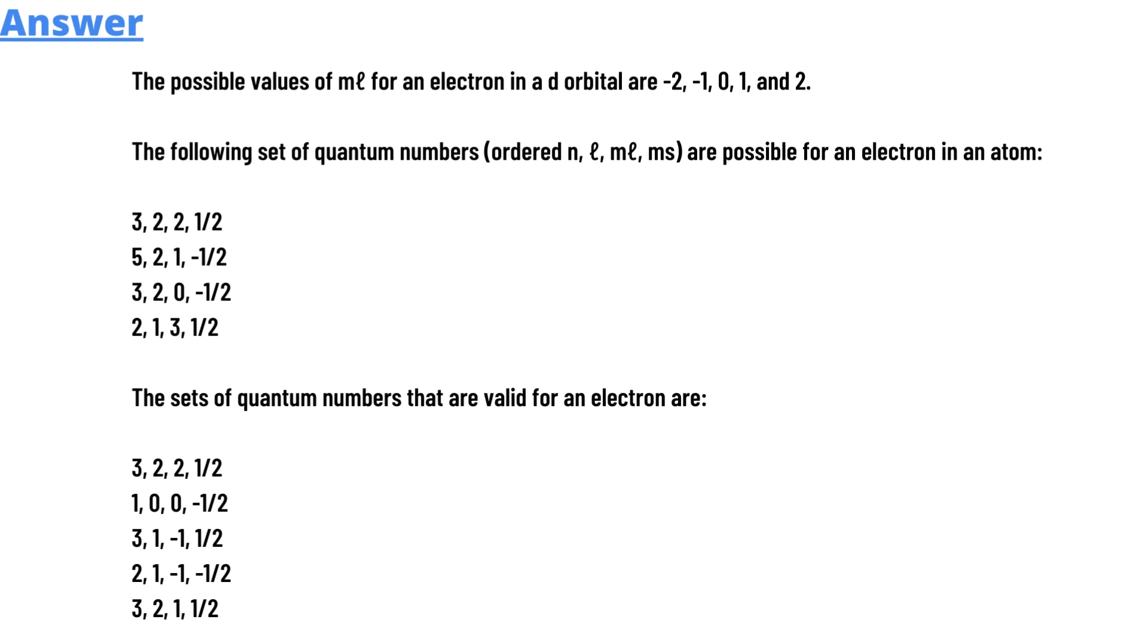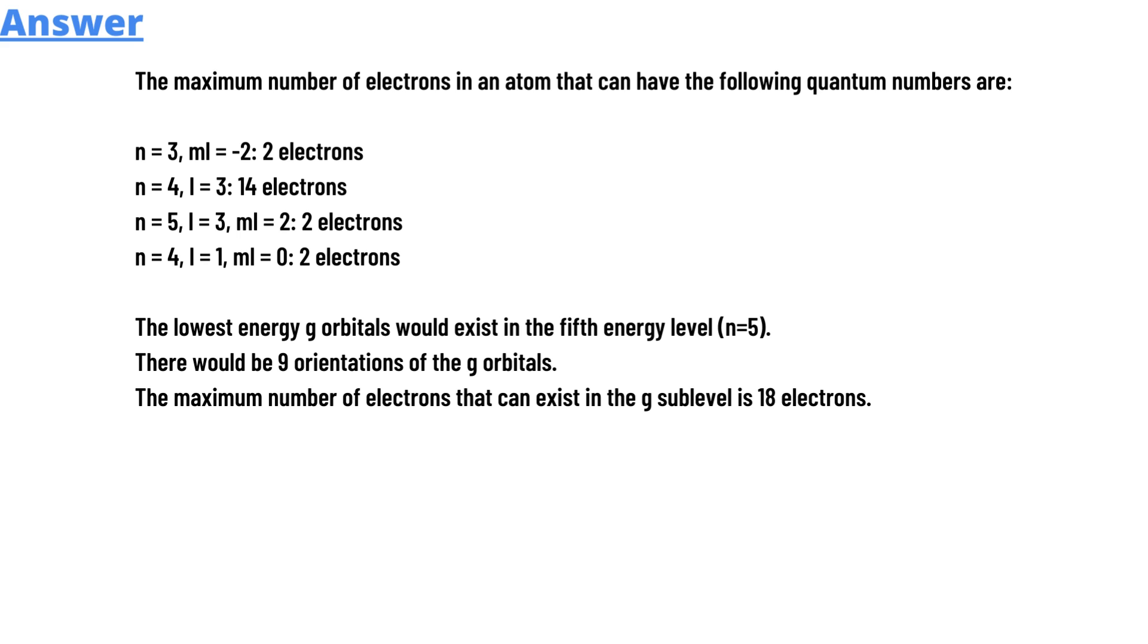The following sets of quantum numbers ordered n, l, m_l, m_s are possible for an electron. The formulas are given below. The sets of quantum numbers that are valid for an electron are the formulas given below.